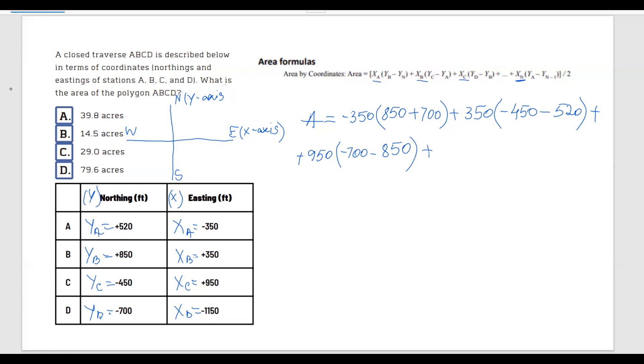Plus xC is 950 multiplied by yD is -700, minus yB, yD minus 850. Moving forward plus xN, which in our case is going to be xD, -1150, multiplied by yA, which is 520, minus yN minus 1, which will make D minus 1. So D minus 1 is actually point C. So yC is minus with minus from the formula. It's going to be plus 450, and all of it is divided by 2. I will just multiply all of this by 1 over 2.